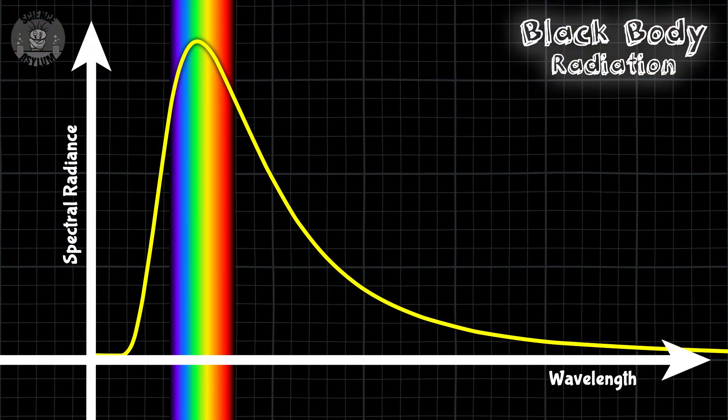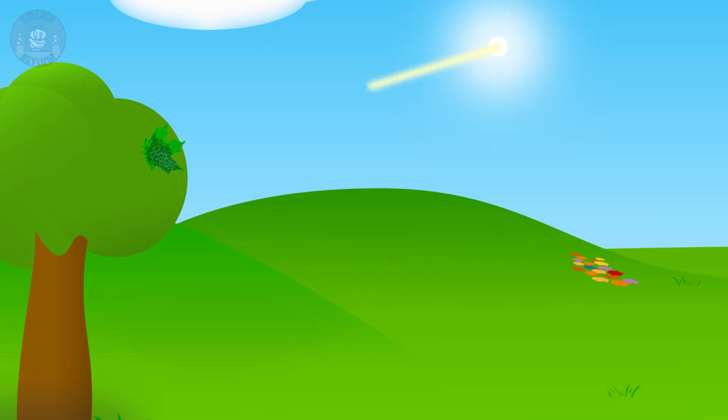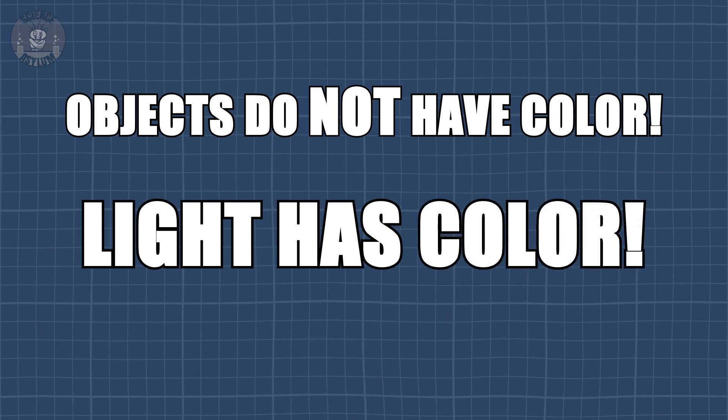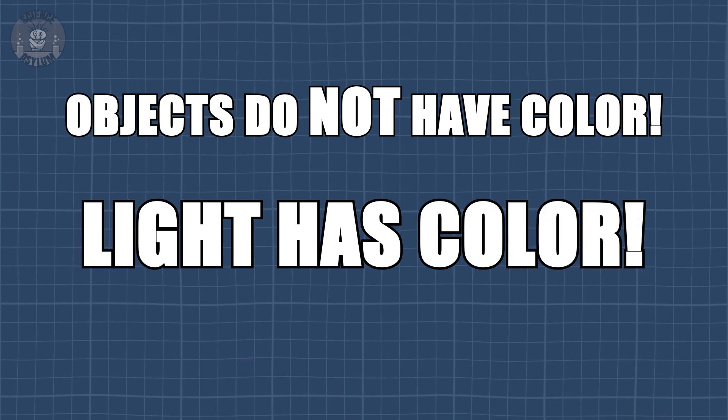Let's start with that reflection. Remember, the sun emits all the colors in the visible spectrum. The reason this leaf looks green is because that's the color the leaf reflects. Let me repeat that for everyone in the back. Objects do not have color. Light has color.